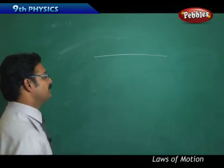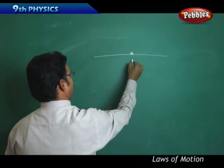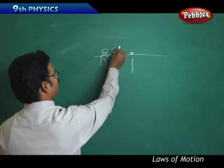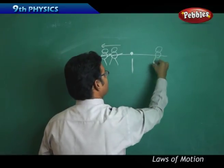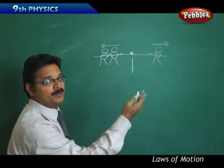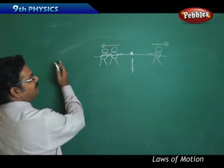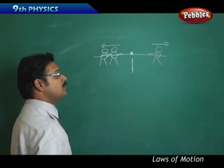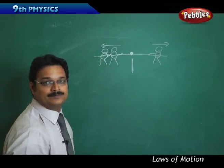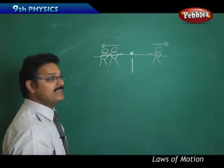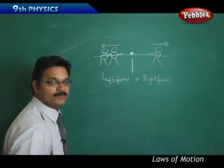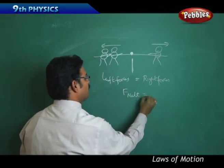For balanced force, take the example of tug of war. There is a rope with a reference line. On one side two persons are pulling the rope towards the left, and on the other side one person is pulling the rope towards the right. If the rope moves towards the left, the left side force is greater. If the rope moves towards the right, the right side force is greater. If the rope is not moving and the point is exactly at the reference line, then left force equals right force and net force equals zero.